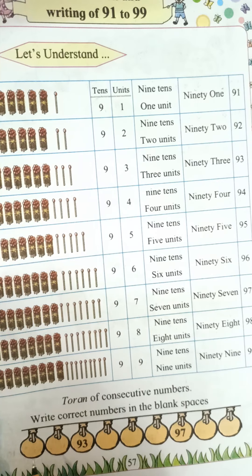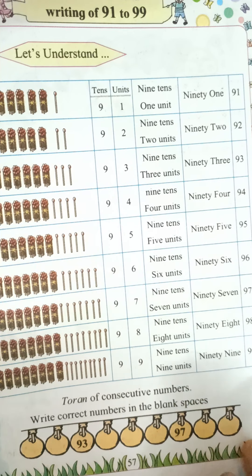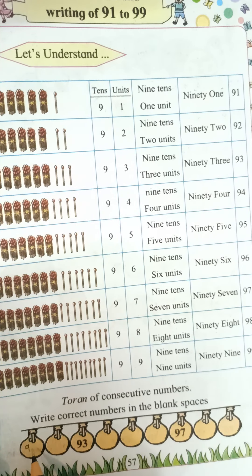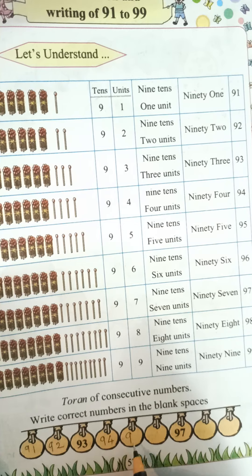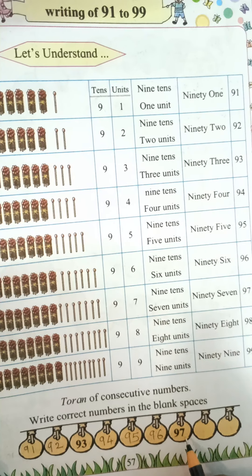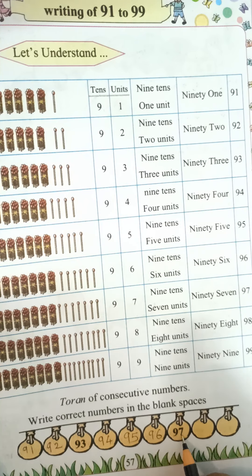Bundle of 10 are 9. So 9 in tens place. Unit place: count 1, 2, 3, 4, 5, 6. So 6. 9 in tens, 6 units — 96. 9, 6, 96.